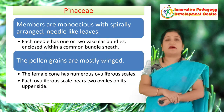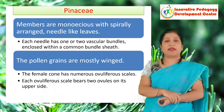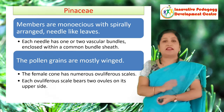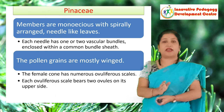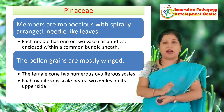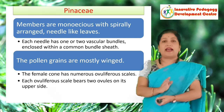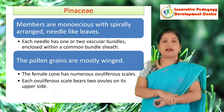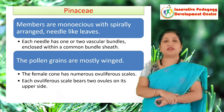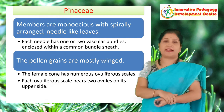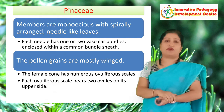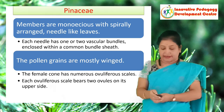In the family Pinaceae, the members are monoecious — that means the male and the female cone are present on the same plant — and the branches are dimorphic with needle-like leaves. The pollen grains are mostly winged and the ovuliferous scales are having two ovules on their upper side.